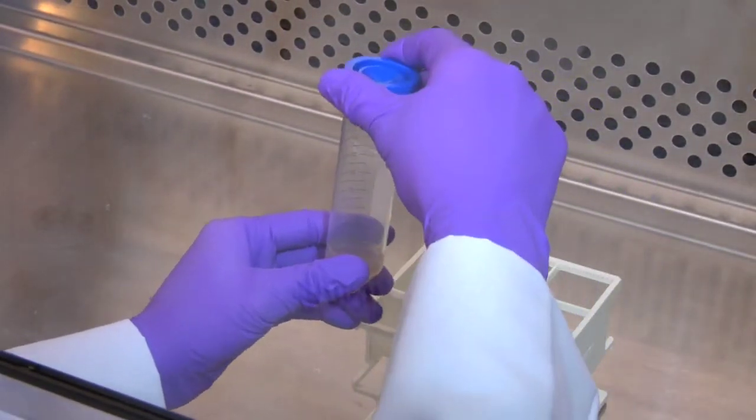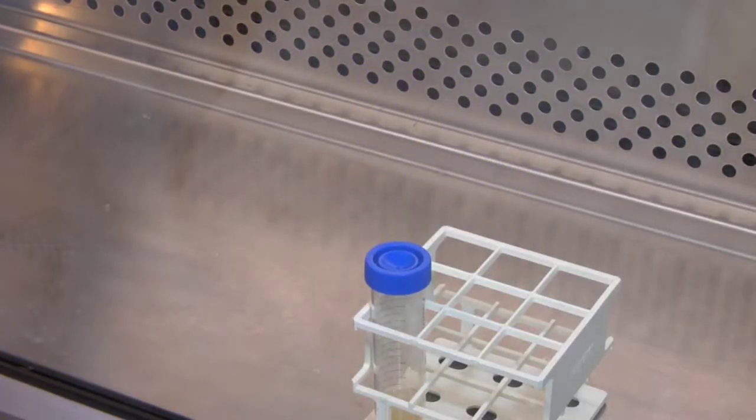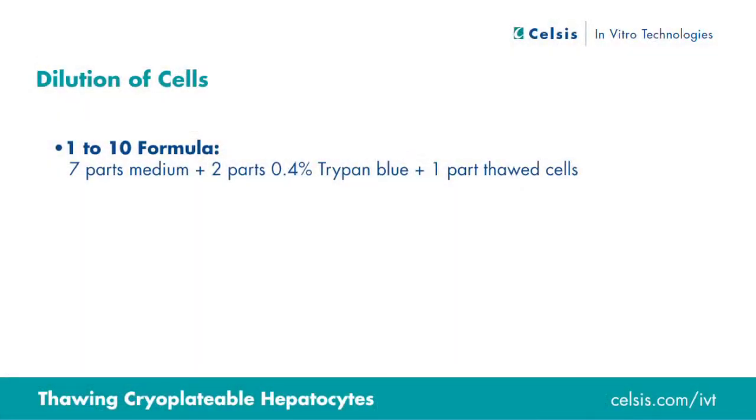The cells now must be diluted in order to prepare them for accurate cell counting. Dilution follows a basic 1 to 10 formula. Seven parts medium or buffer are combined with two parts trypan blue and one part thawed cells.